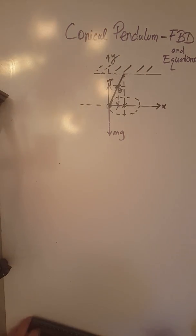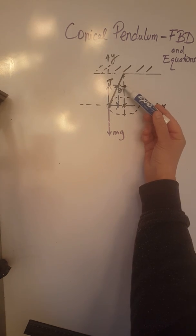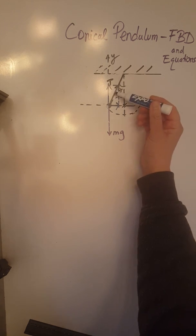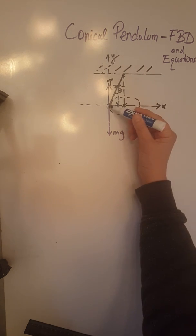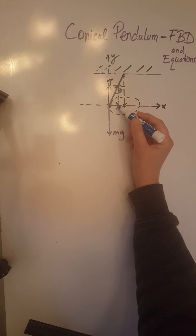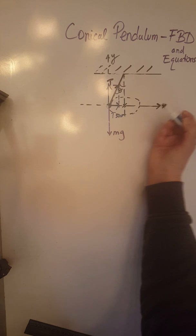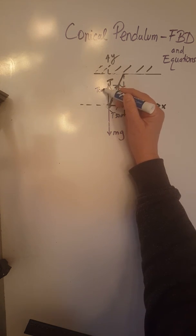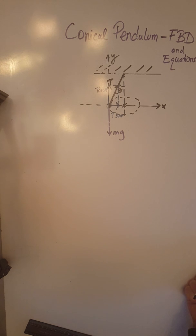Now we are going to label those two forces according to the angle theta. As you can see, if this is theta here, then this must also be theta, which makes this force, this component of the tension, T sine theta, and this component over here T cosine theta.